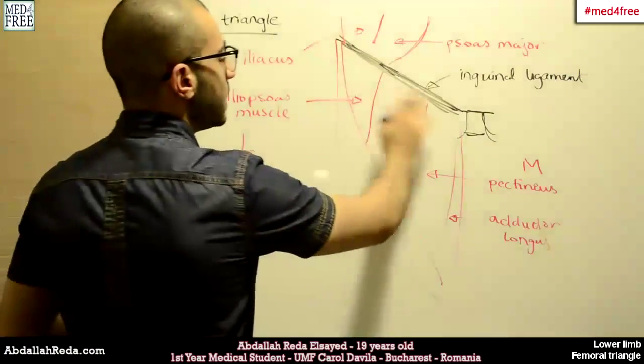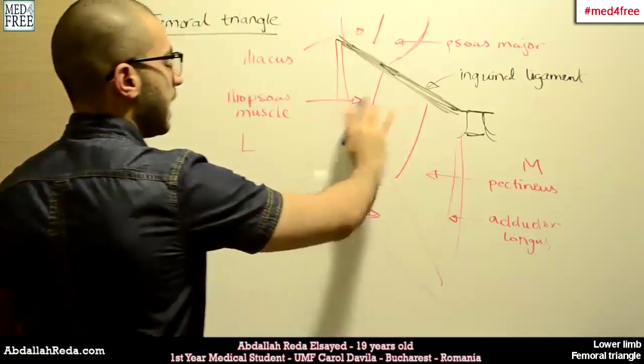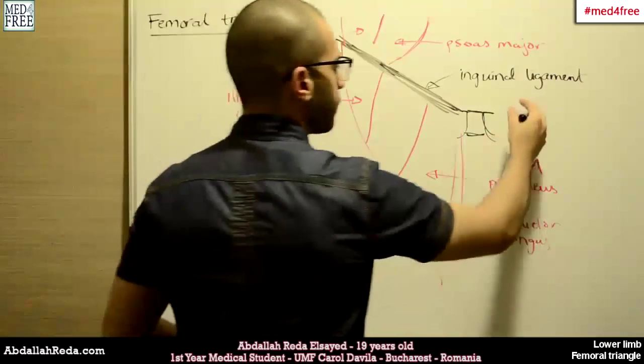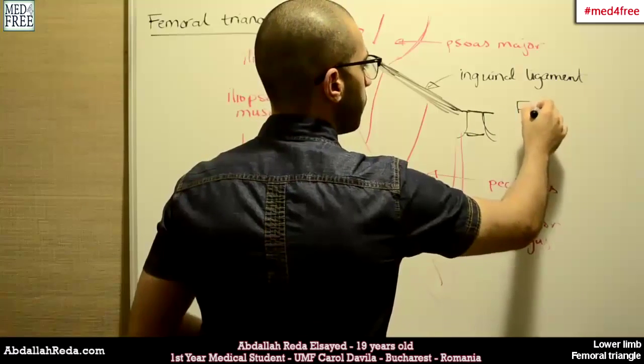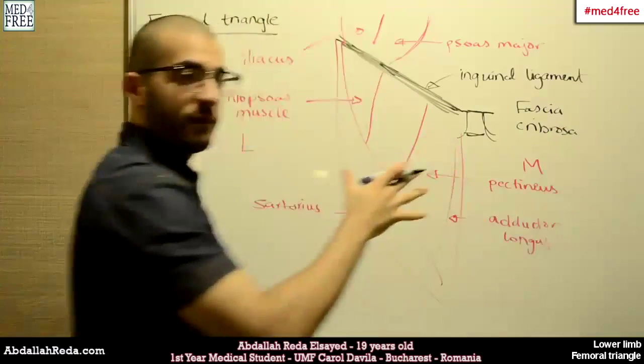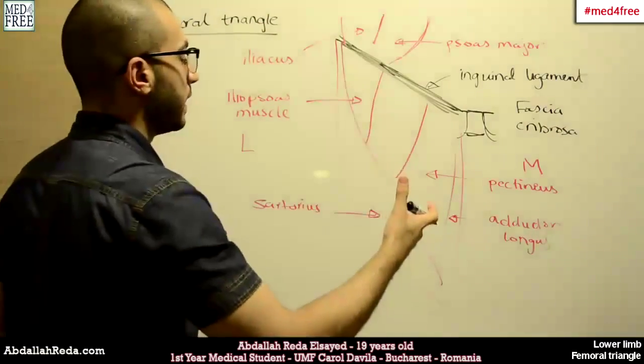And then, we have a sheath or a fascia that covers this femoral triangle which is called Fascia Cribrosa. Fascia Cribrosa. And above this fascia, there are other elements.